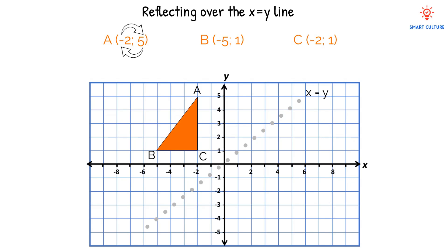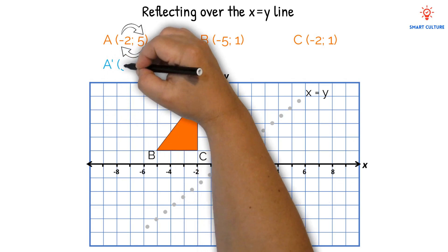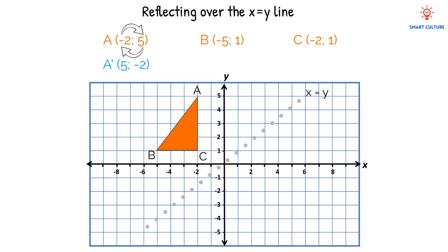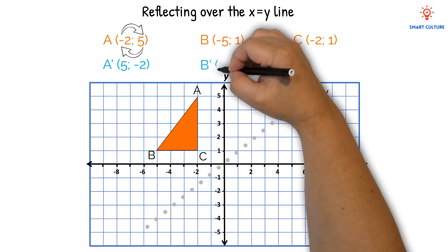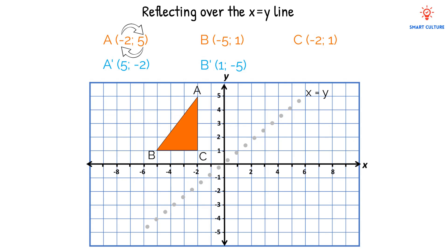We need to swap the x and y-coordinates for each point. Therefore, A will become A': 5 and negative 2. We took the x-value of negative 2 and the y-value of 5 and swapped them, so that in the reflected image the x-value will be the original y-value, which was 5, and the y-value will be the original x-value, which was negative 2. B' will become 1 and negative 5. And C' will become 1 and negative 2.